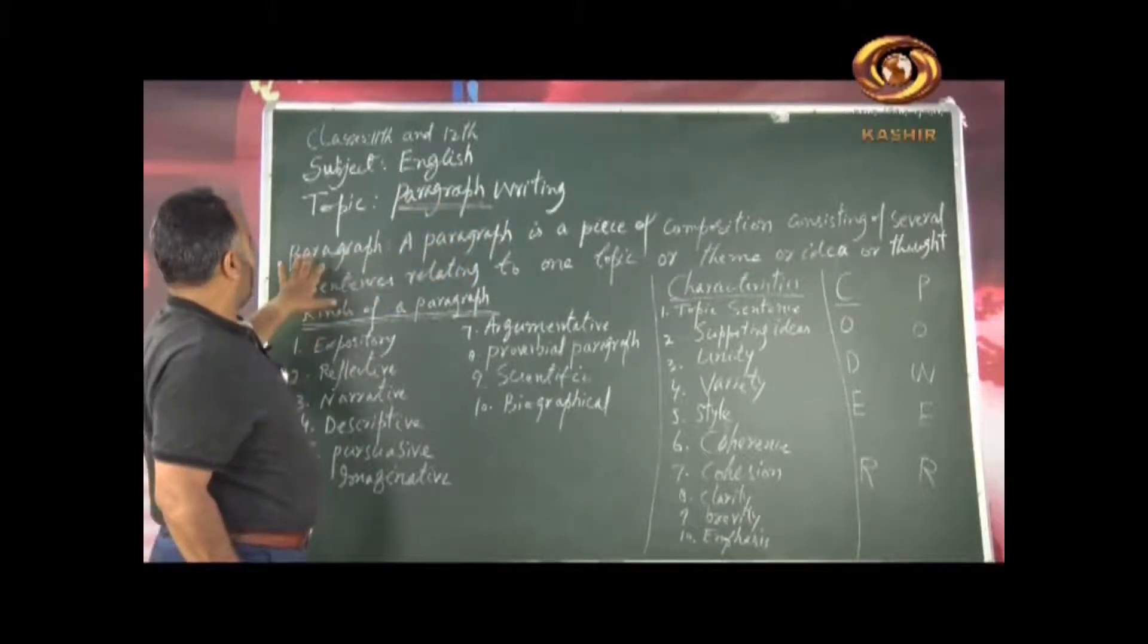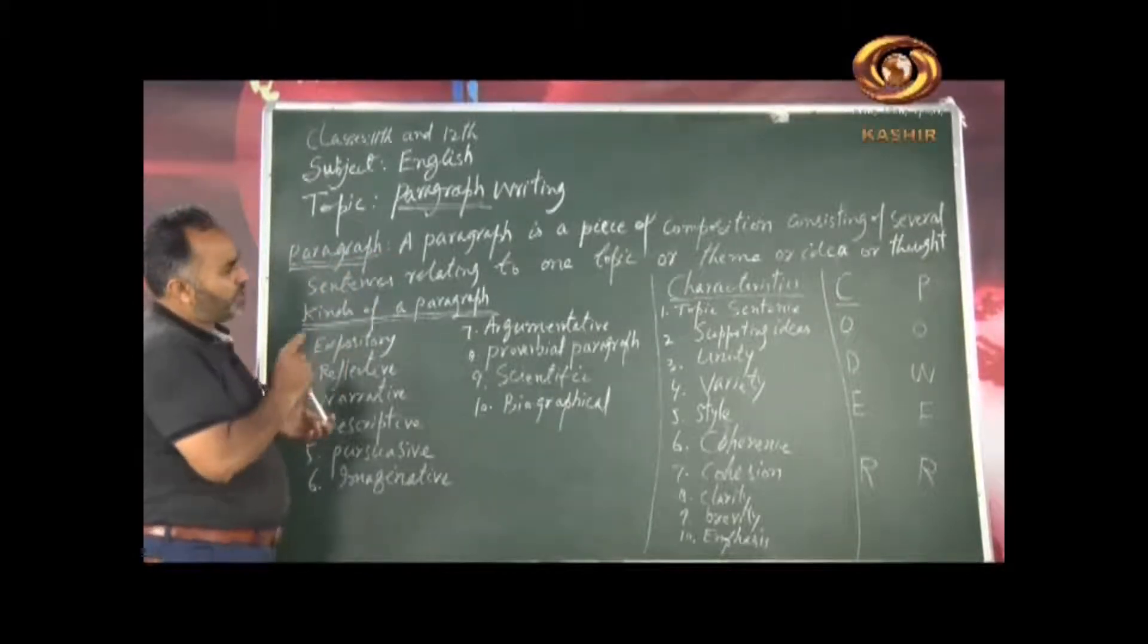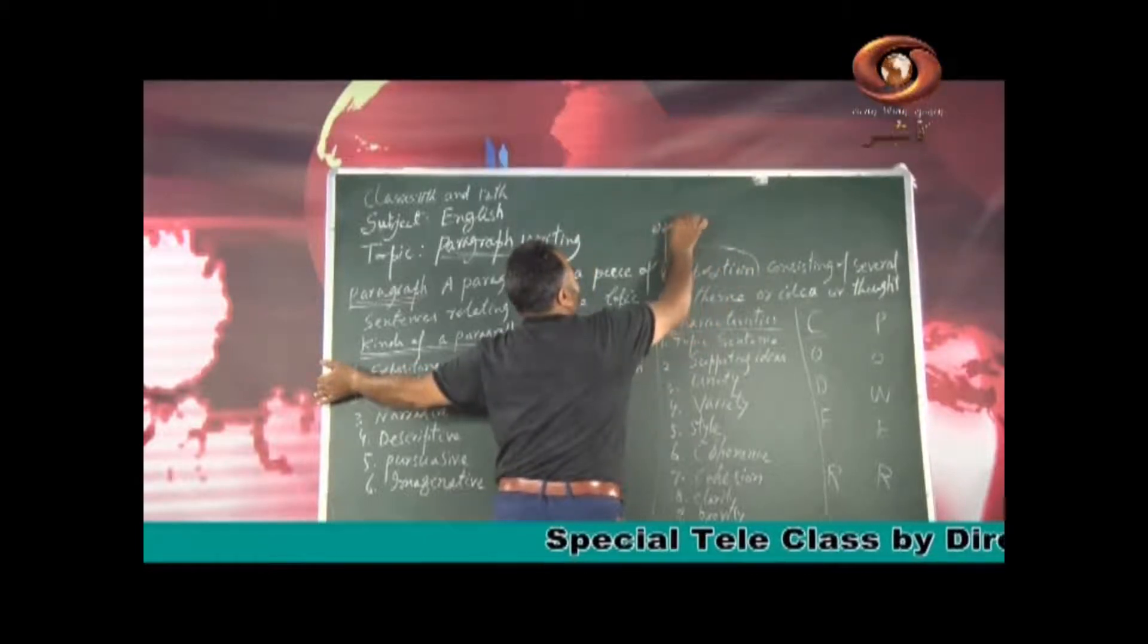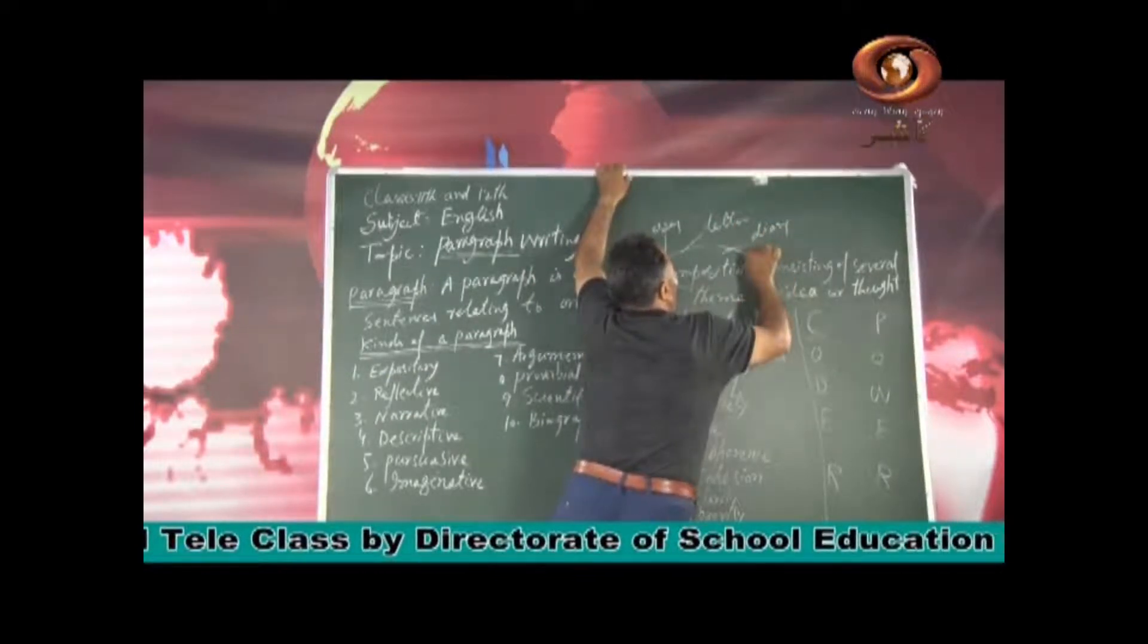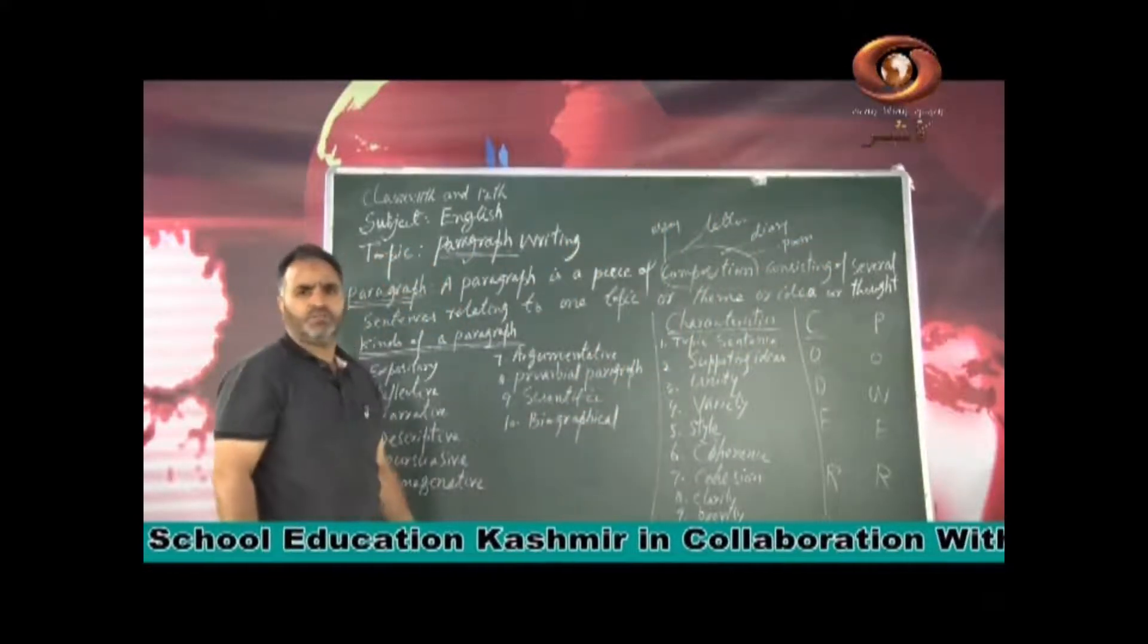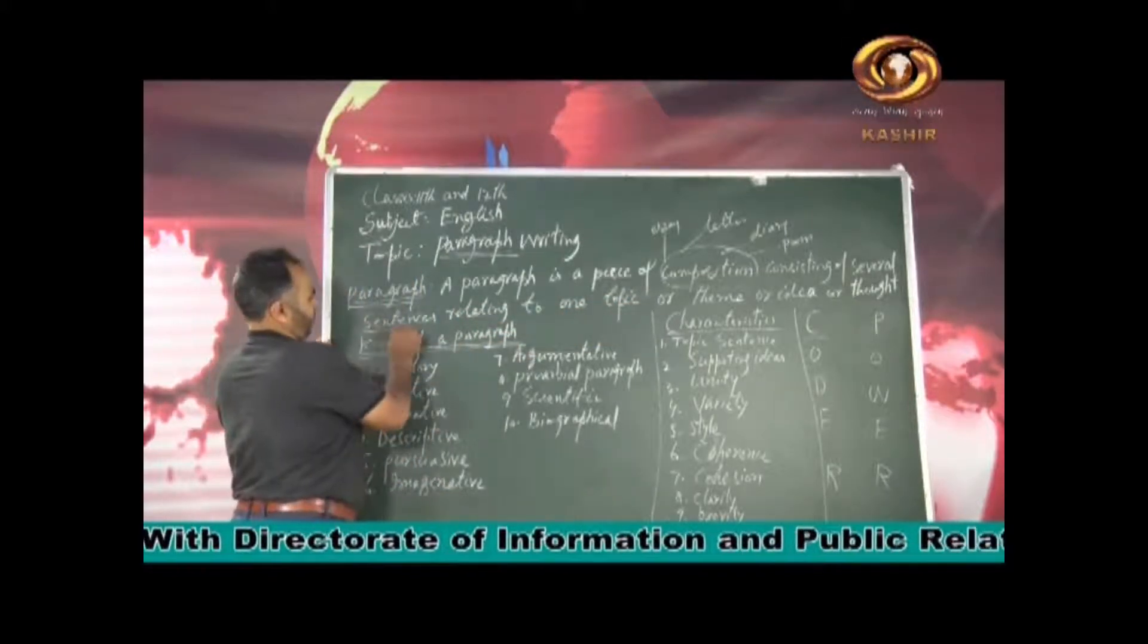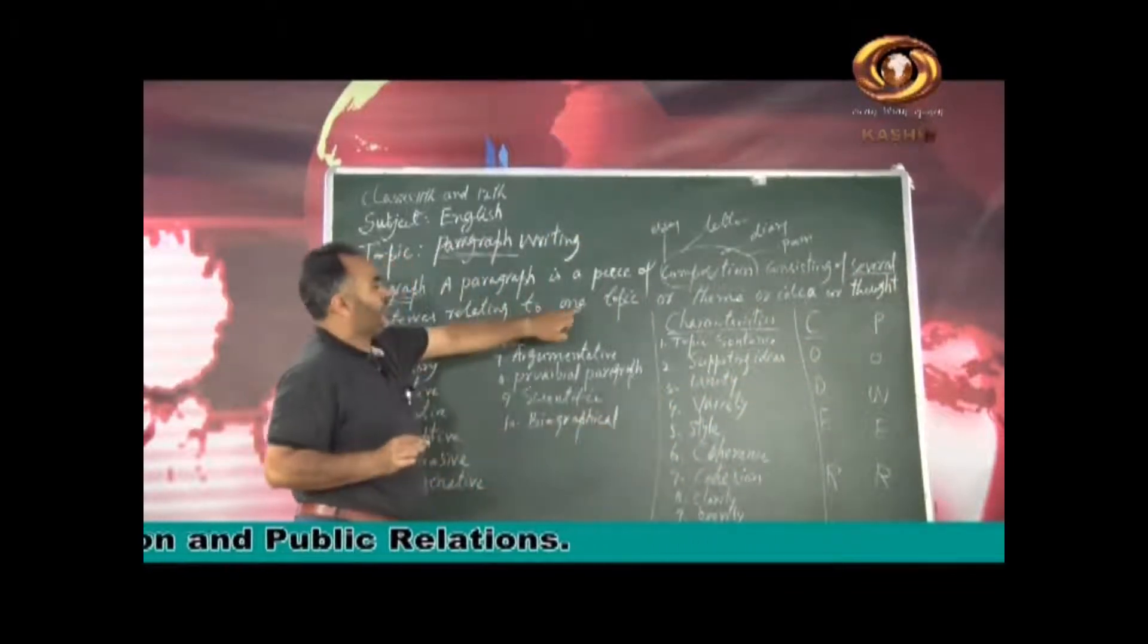Now let us come to the point. What is a paragraph? Basically I have written here. A paragraph is a piece of composition. You know composition is a broader term. Under composition will come everything - essay will come under it, letter will come under it, diary entry will come under it, dialogue will come under it, even if you write a poem it can come under it. Whatever you write that will be a piece of composition for you. So it is a piece of composition which consists of several sentences relating to one topic.